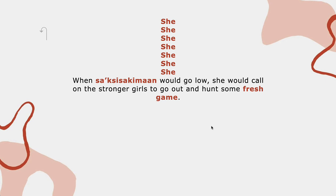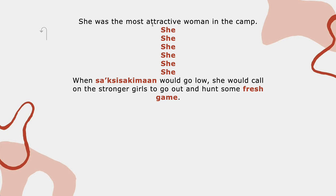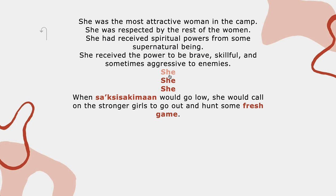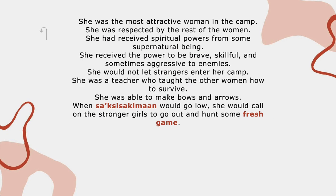This is what I wanted to show you. These are different lines in the story with 'She,' and if we click on it, it reveals what the full line is. So: 'She was the most attractive woman in camp. She was respected by the rest of the women. She had received spiritual powers from some supernatural being. She received power to be brave, skillful.' I won't read all of them, but you get the idea.